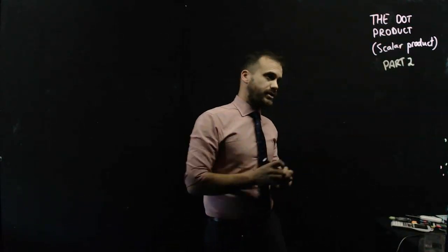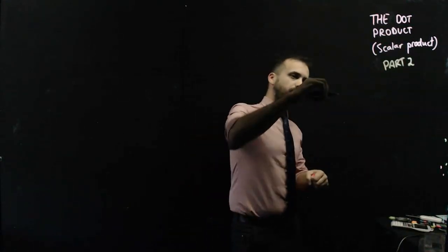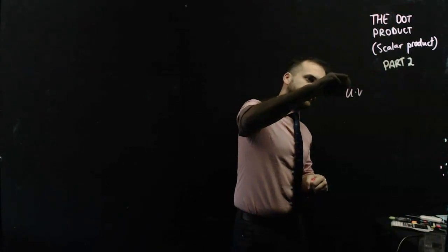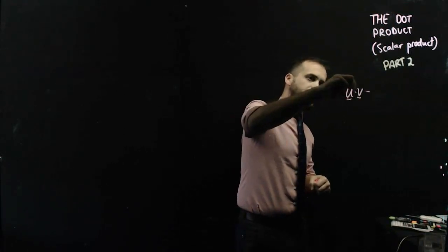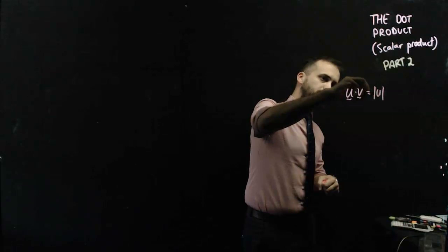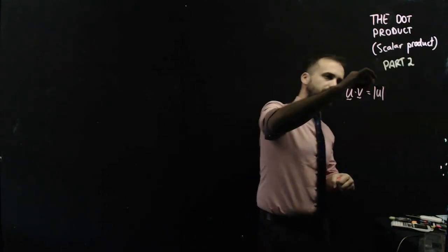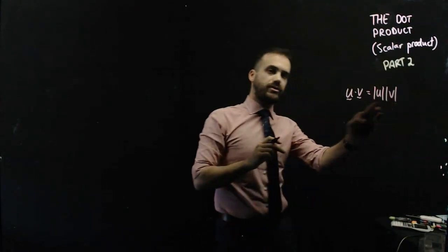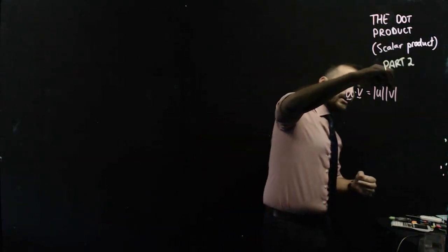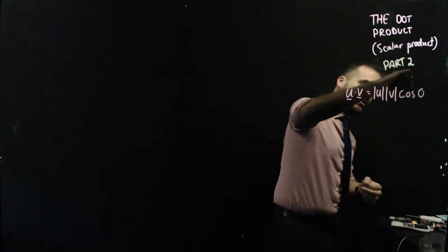So if we have two vectors, say u and v, we can say that the dot product of u and v is equal to the magnitude of u times the magnitude of v, now those are both numbers, cos theta.